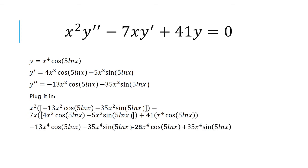This leaves us to just simplify. Notice first, the x squared multiplies the negative 13x squared cosine and the negative 35x squared sine. Distribute it, you get negative 13x to the fourth cosine minus 35x to the fourth sine.